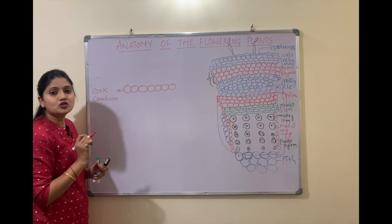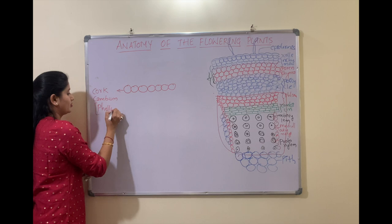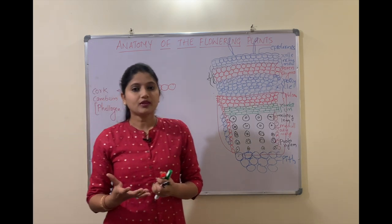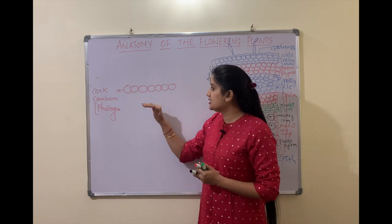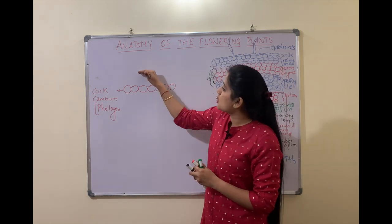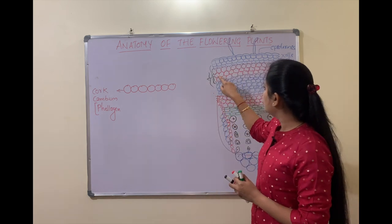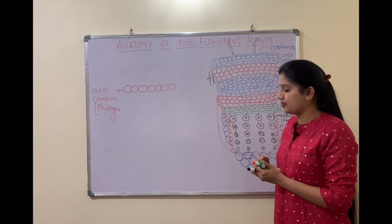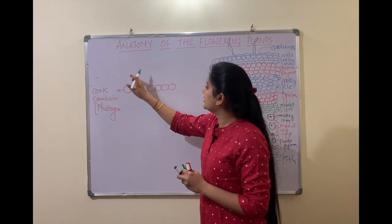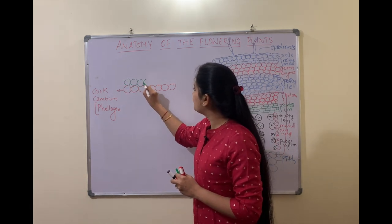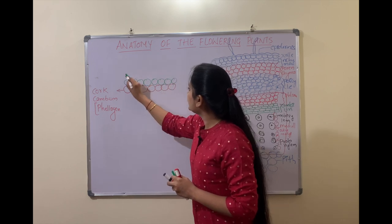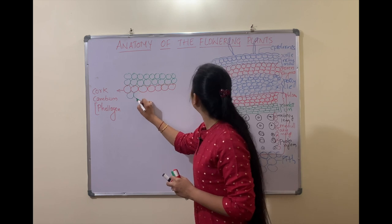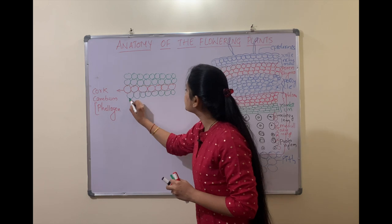The cork cambium is also called as phellogen. What do meristematic cells or cambium do? They have the capacity of active division. This particular layer will start producing new cells on the outer side as well as on the inner side. These are a couple of layers of new cells produced on the outer side, and these are a few layers produced on the inner side of the cork cambium.